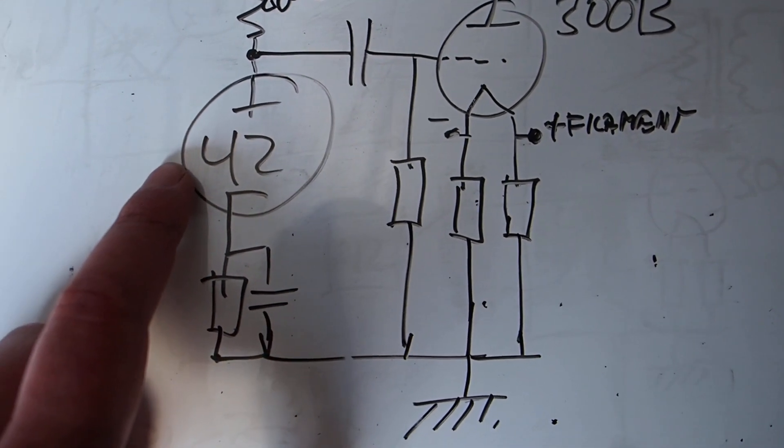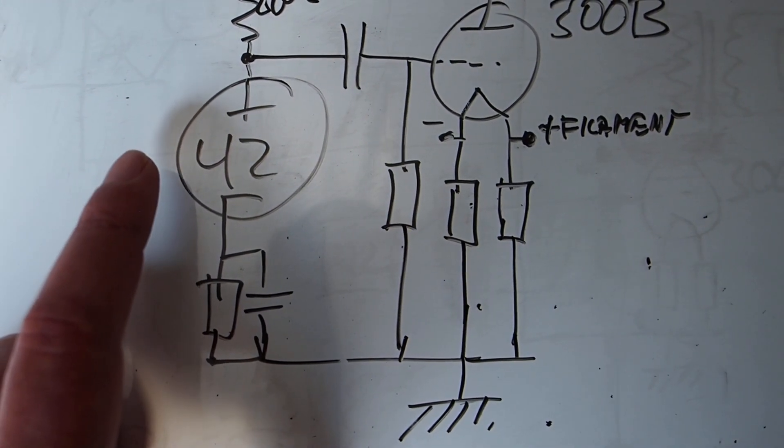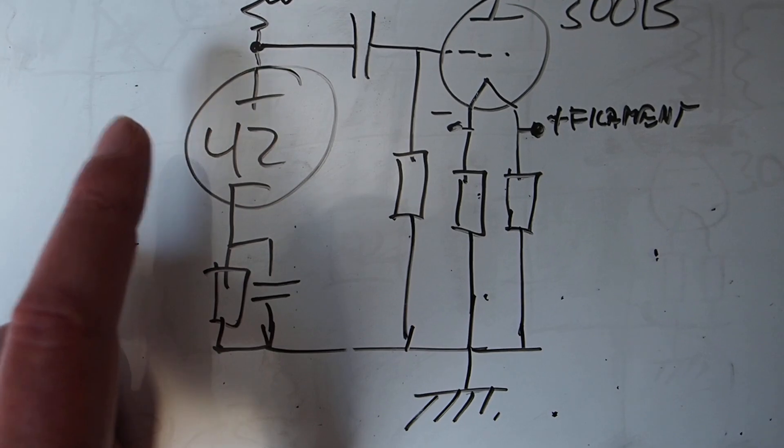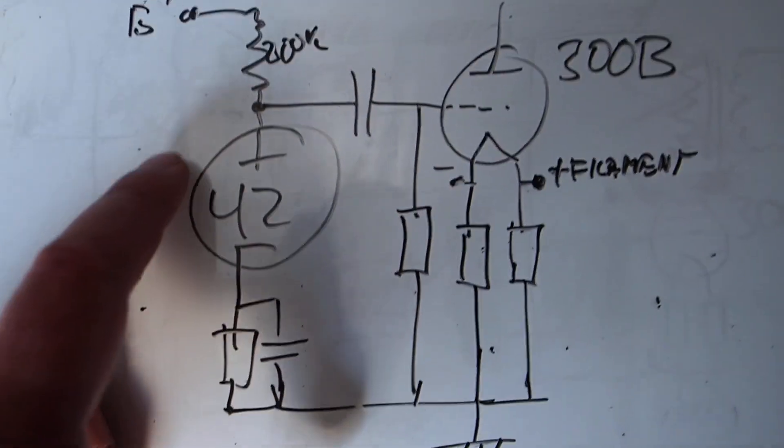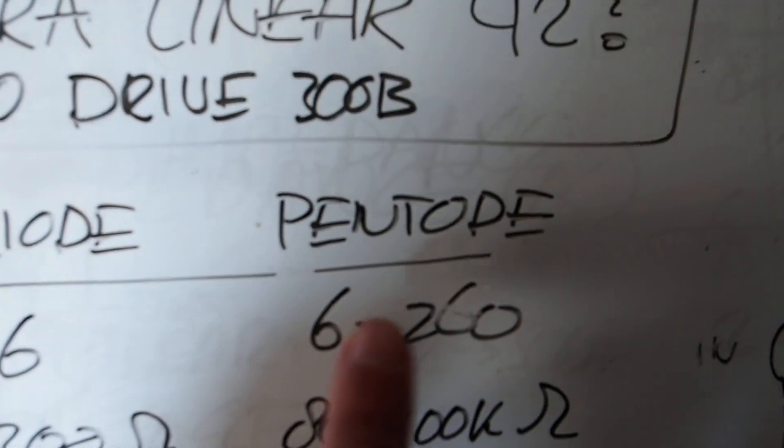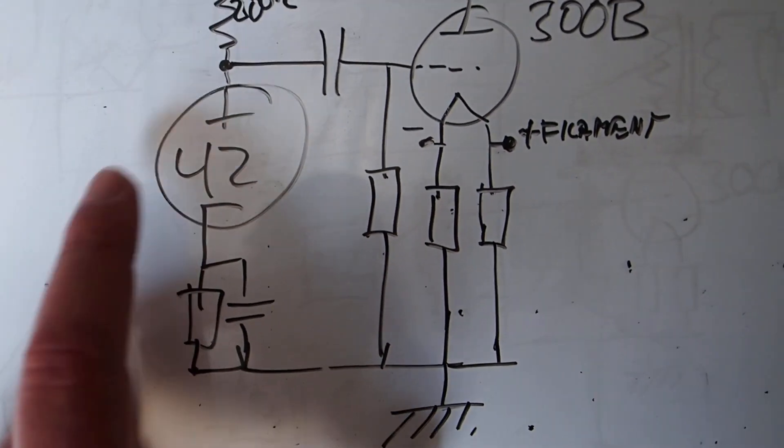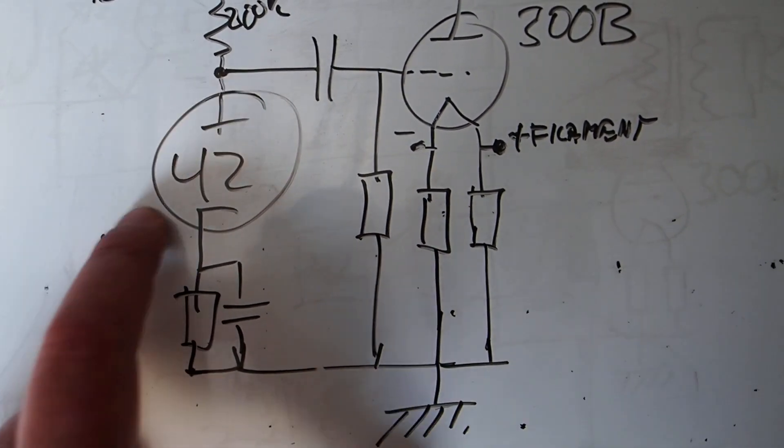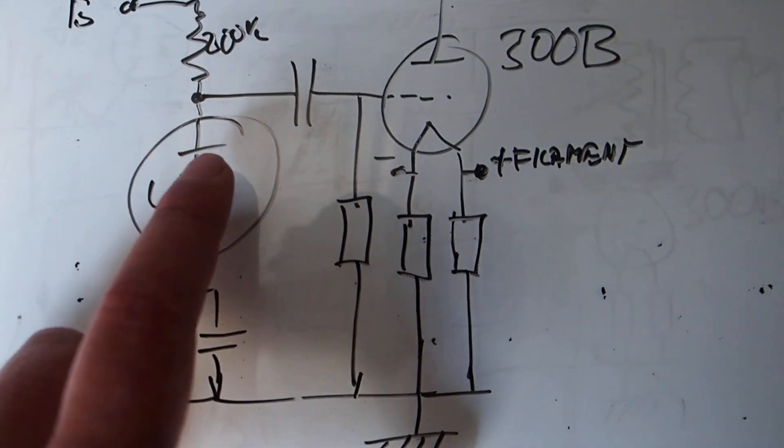As a pentode, it is really not suitable to drive low impedance loads. It likes high impedance loads, something like 200k or something. That's when you get the amplification and it can still deliver quite some current. This is a power pentode, it's not a signal tube. So this is out of the question.